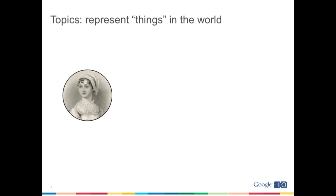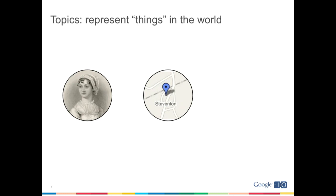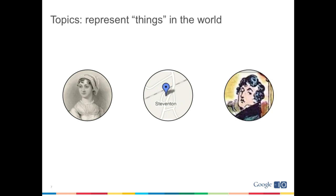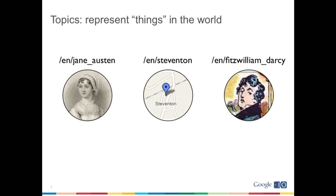So that we're all using the same terminology: topics are objects that represent things in the real world. For instance, we have a topic that represents a person, Jane Austen; topics that represent places like Steventon where she was born; and topics that represent other things like planets, iPods, and things like that. What's unique about Freebase is that all of these topics have strong identifiers — a unique and dependable way to reference these objects. But it's important to keep in mind that while objects have IDs, the IDs are not actually their names. Names are actually attributes on these objects.